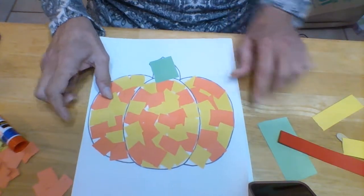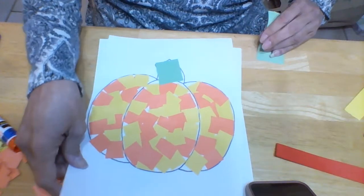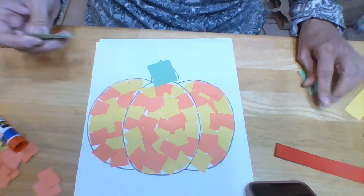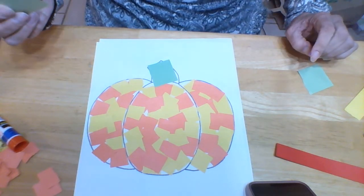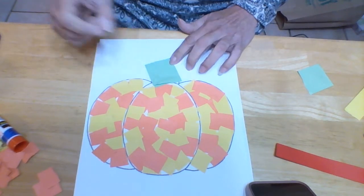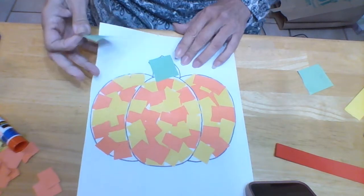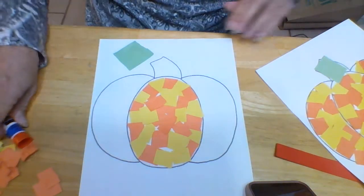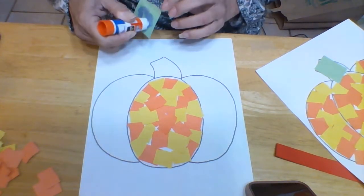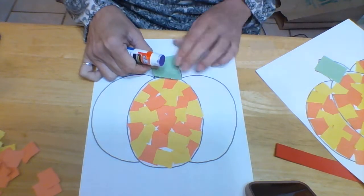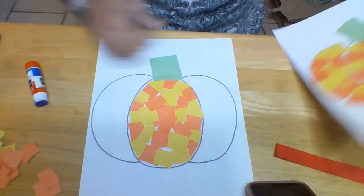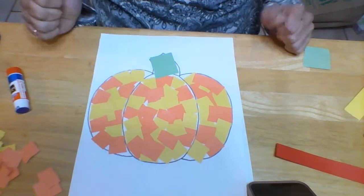And then when you're done, you're going to take a piece of green paper and do what? You're going to glue it on top of there. And make a what? A stem. And then when you're done, your beautiful picture will look like this.